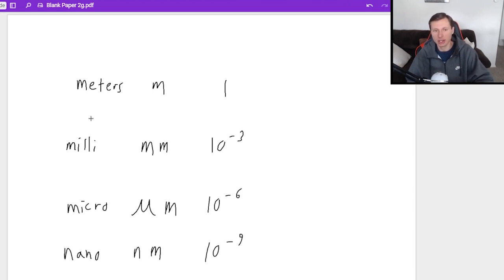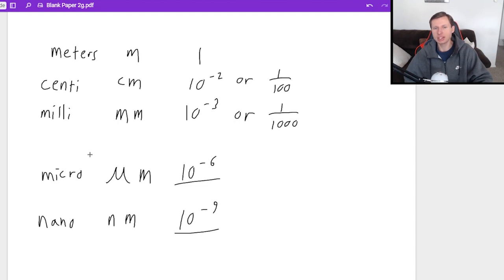And then the only other thing I want to make sure I cover is you can have centimeters as well. That's going to be cm, and it's somewhere in between 1 and 10 to the minus third. It's the only one like this, and that's going to be 10 to the minus second, or you can also think of it as dividing by 100. As a matter of fact, milli you can also think of as dividing by a thousand, and technically the same is true for micro and nano. But once you get to micro and nano levels, it's easier just to write it in scientific notation like this. And that's it for the getting smaller ranges. In other words, as you go down this list, you're getting smaller and smaller and smaller.